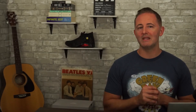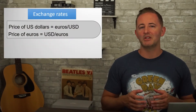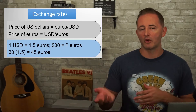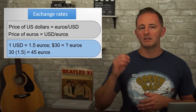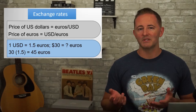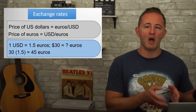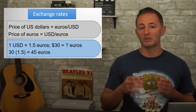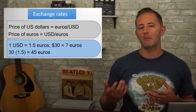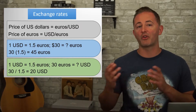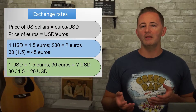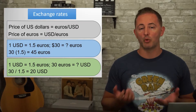A slightly more advanced question could give you an exchange rate and ask how much something costs in the other currency. If the exchange rate is 1 dollar to 1.5 euros, something that costs $30 would be 30 times 1.5, which equals 45 euros. If it asked how much something costing 30 euros would cost in dollars, we'd do 30 divided by 1.5, which equals $20.